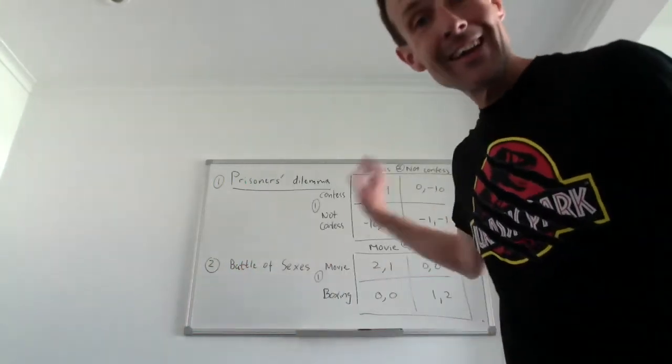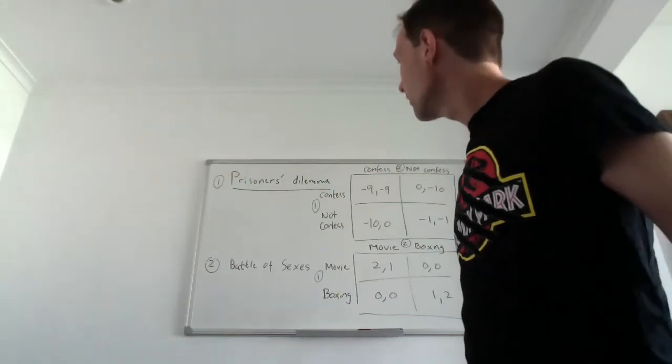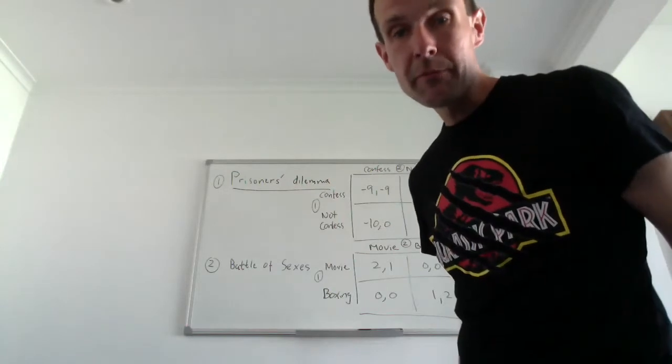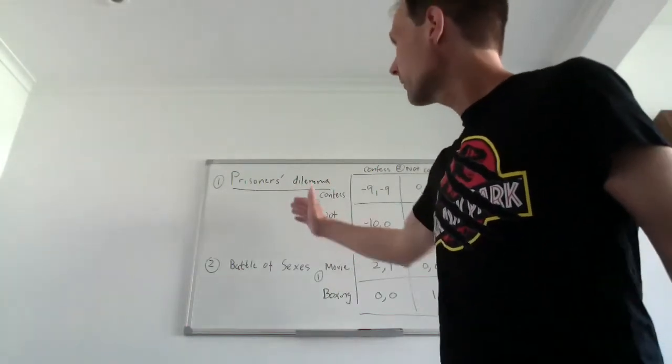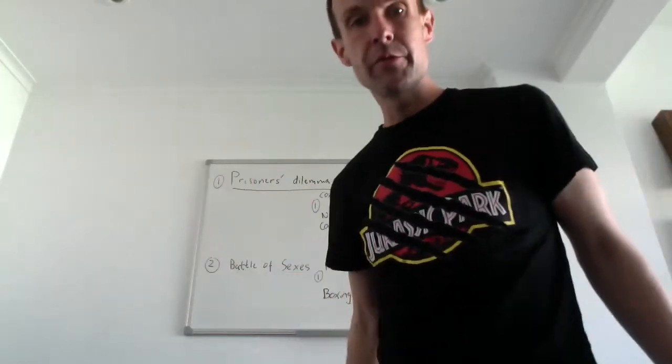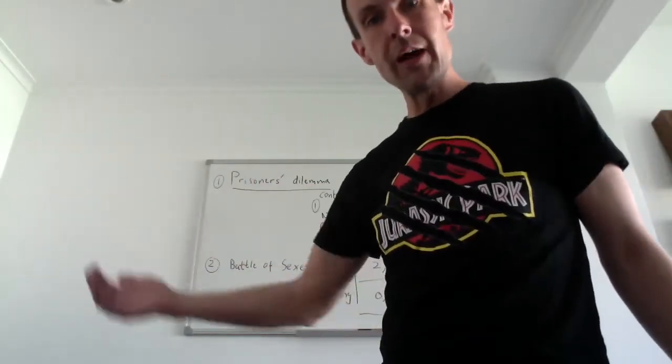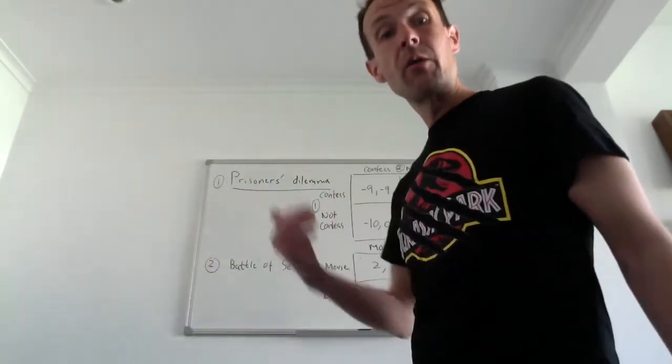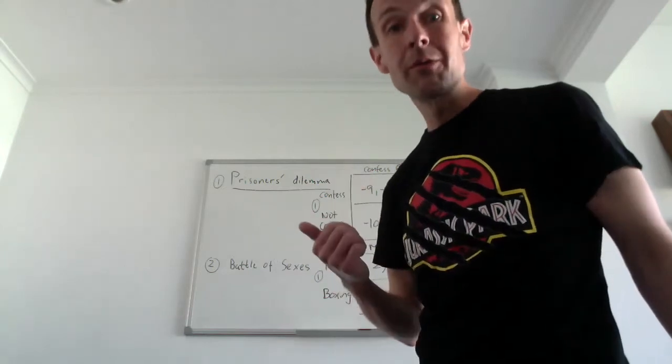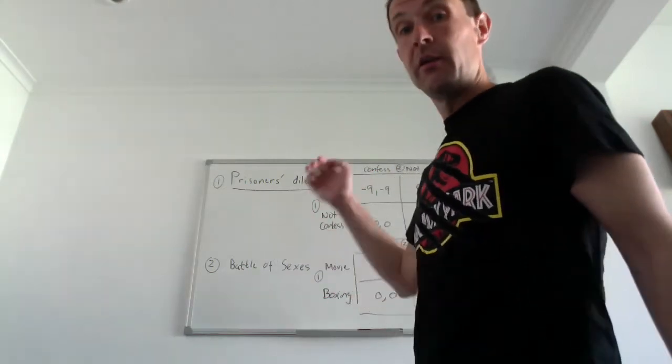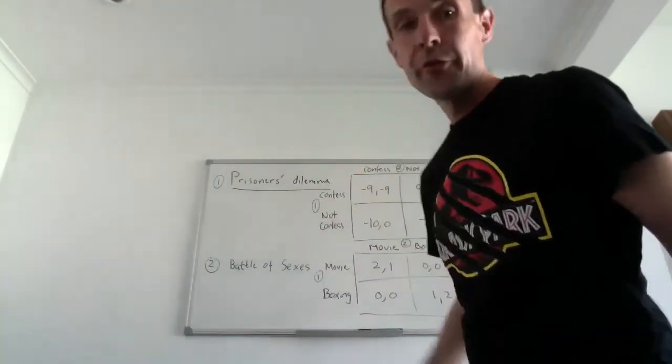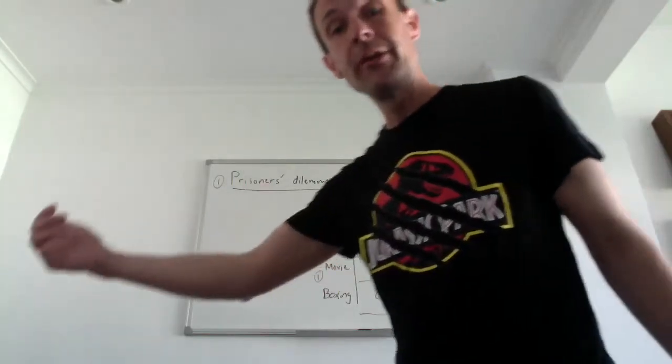Let me take you to a couple of examples that are classic examples in game theory. Consider the first one, that is called the prisoner's dilemma. You probably heard of that before, but take the story that there are two criminals or two people, two guys that has been out robbing a bank. The agreement is that if we are caught by the police we don't tell the police anything.